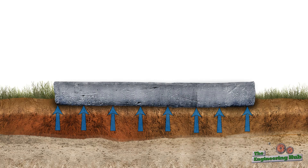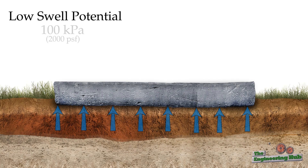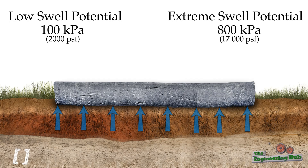The magnitude of the pressure mostly depends on the amount of water adsorbed and type of swell minerals present. The uplift pressure can range from 100 kPa, which is about 2,000 pounds per square foot, for soils with relatively low swell potential, to an astounding 800 kPa or 17,000 pounds per square foot for soils with extremely high swell potential. Note that a typical residential two-story house weighs less than 1,000 kilos per meter squared, which is about 200 pounds per square foot. So its weight is no match for the uplifting forces of the soil.